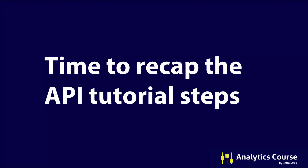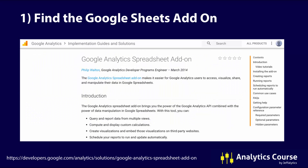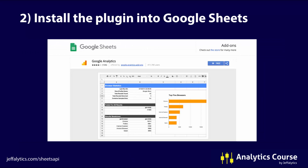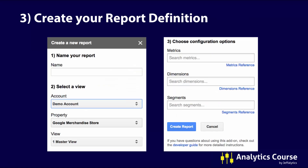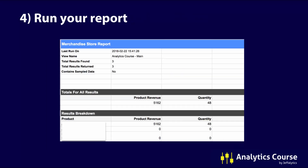Time to recap the API tutorial steps. Step one: find the Google Sheets add-on and the information behind it. Step two: install the plugin into your Google Sheets — simply click the free button and it will be installed. Step three: create your report definition. Chances are it probably won't work the first time and you might be intimidated by that, but notice how we got out of it quickly just by trying new things. Step four: run your report, get the results, and start creating awesomeness within Google Sheets to share with your organization. This is a very basic introduction to the Google Analytics API — even though it's using a plugin, you basically did the equivalent of writing code to tap into Google Analytics and bring data back into a spreadsheet.